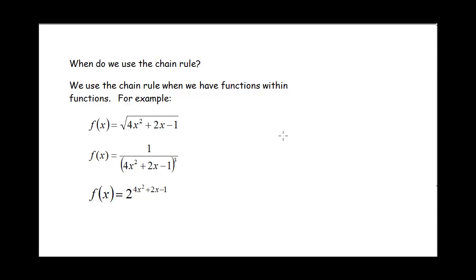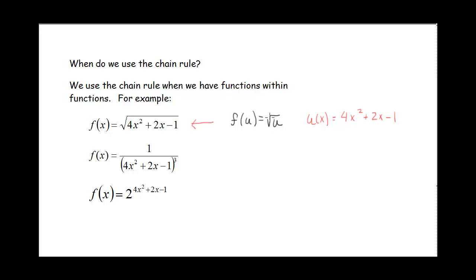When do we need to use the chain rule? We need to use the chain rule when we have functions within functions — we have multiple layers to our functions. This function can be thought of as an outer function of a variable u, which is the square root of u, and then u is a function that depends on x and equals 4x squared plus 2x minus 1. So we have the outer function, which is the square root function, and the inner function, which is 4x squared plus 2x minus 1.